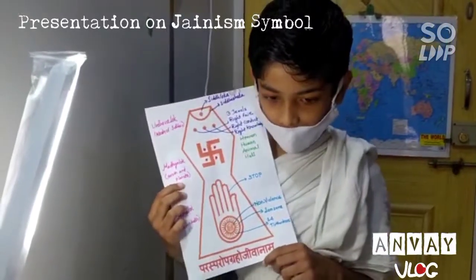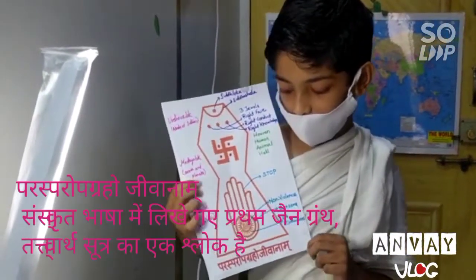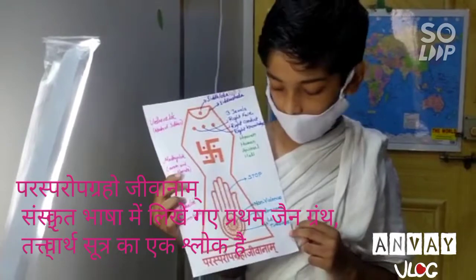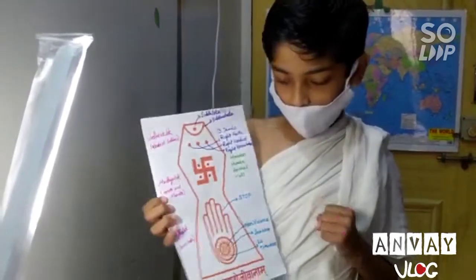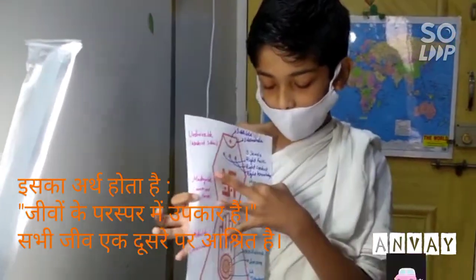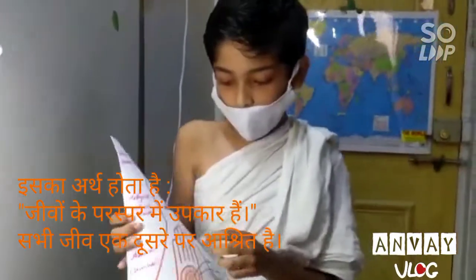The symbol of Jainism is a religion symbol. The symbol name is Paras Prakro Ho Jiva Nam. I will start from the three pillars from the symbol.